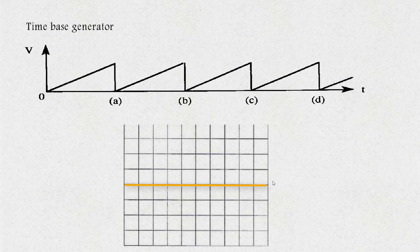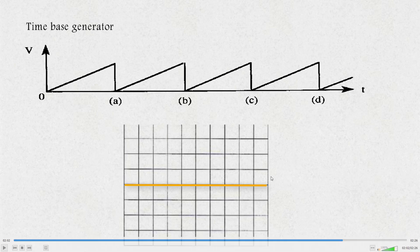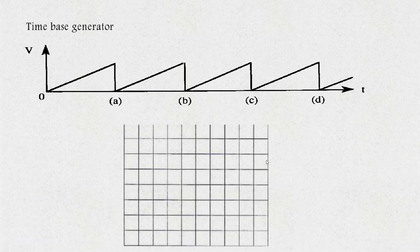The synchronization of these signals is done by the trigger circuit. The trigger circuit is the link between the waveform and the time-based generator. It synchronizes the horizontal deflection of the electron beam with the vertical input.